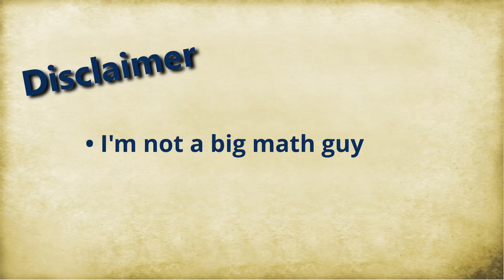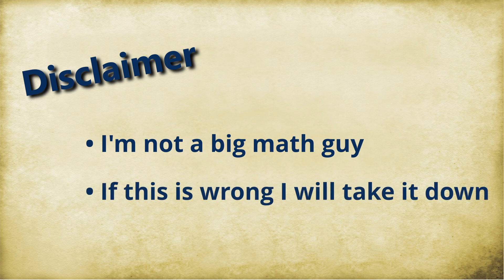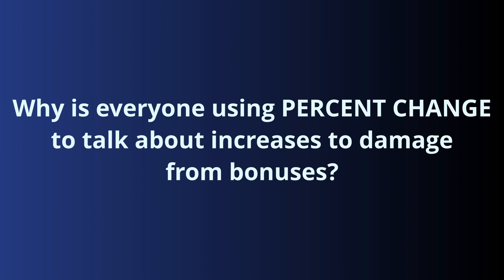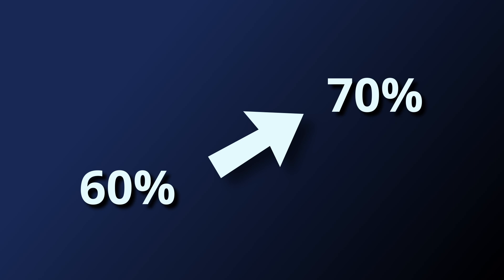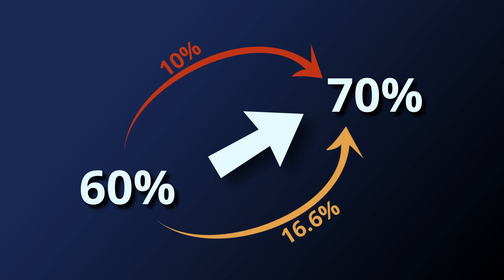I'm not a big math guy — that needs to be a disclaimer right up front. If I'm wrong about this I will take this video down right away. Basically, I've been trying to figure out what is going on with this percent change formula I see everyone talking about on the internet. They will talk about increasing your damage from 60 percent of average damage to 70 percent of average damage and say it's a difference of 10 percent — but actually going from 60 to 70 is a 16.6 percent increase, which it is.